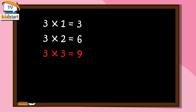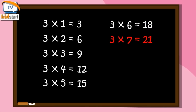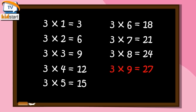Three sevens are twenty-one. Three eights are twenty-four. Three nines are twenty-seven. Three tens are thirty.